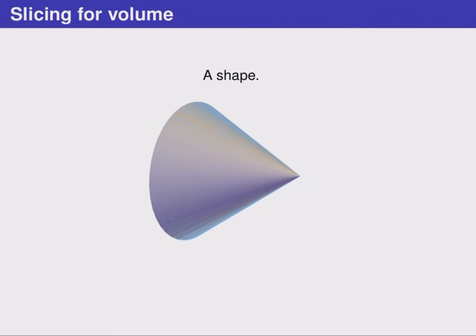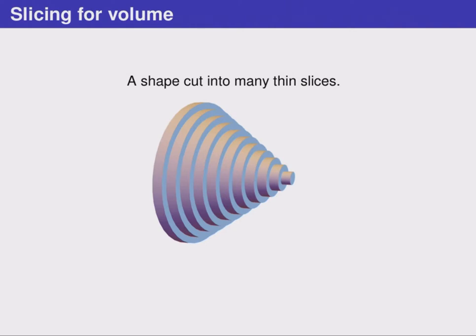If we have a three-dimensional shape, such as this cone, we can imagine slicing it up into many thin pieces that have a nice regular shape. For example, slicing it up into many thin cylinders.